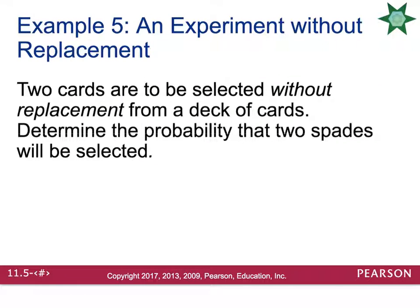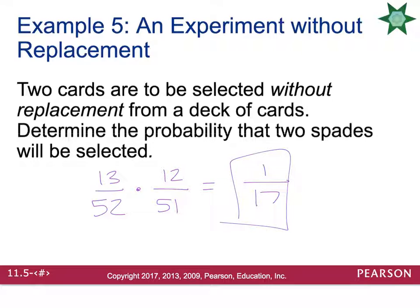For example, two cards are to be selected without replacement from a deck of cards. Determine the probability that two spades will be selected. There are 13 spades total, so event A has probability 13 out of 52. For event B, we already took one spade out without replacing it, so there are only 12 spades left and only 51 cards to draw from. Multiplying across gives 1 out of 17.